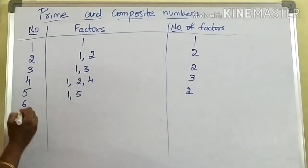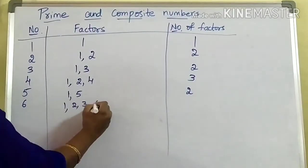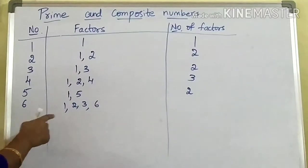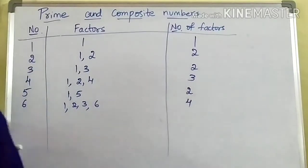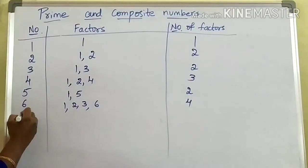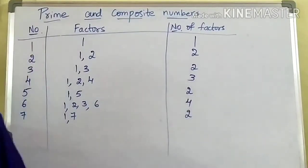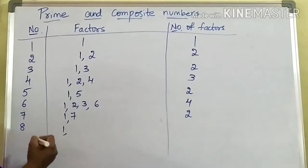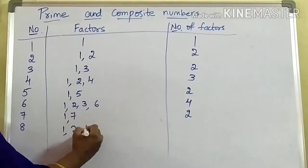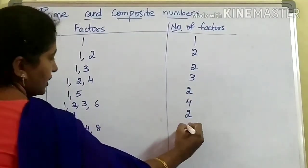Coming to six, factors of six are one, it will go in two tables, three tables, and six tables. So total factors of six are four. Coming to seven, what are the factors of seven? One and seven — it is having only two factors. Next, coming to eight — it is having one, two, four, and eight. So total number of factors for eight are four.